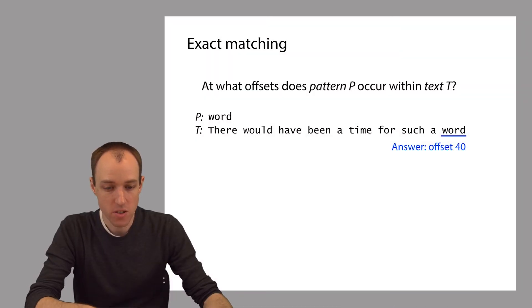We'd like to find all the offsets where some pattern string, which we'll call P, occurs within a longer string, the text, which we'll call T.